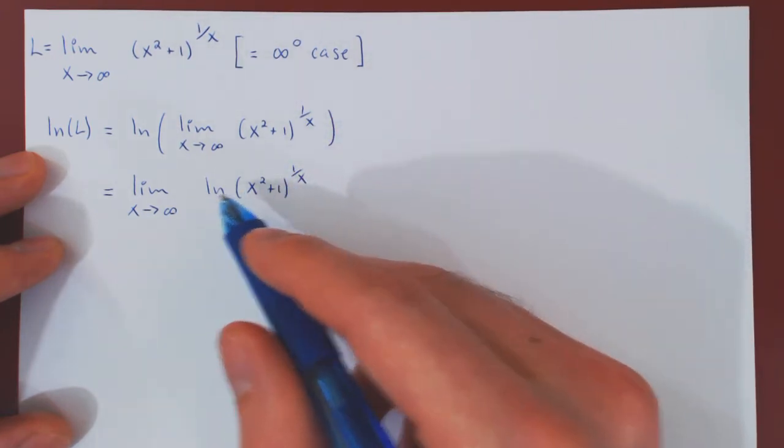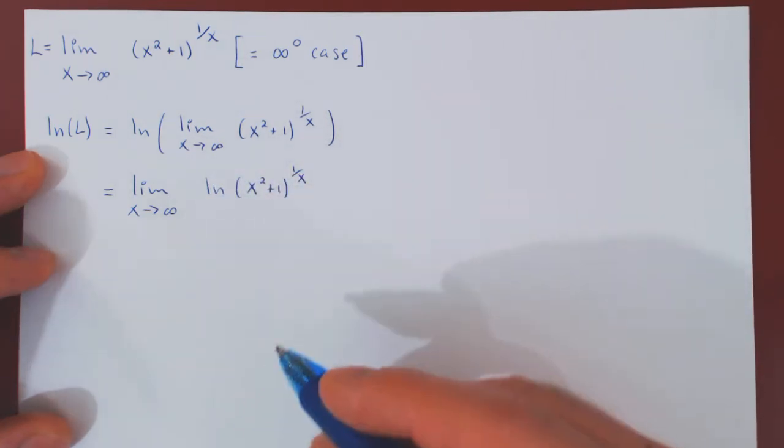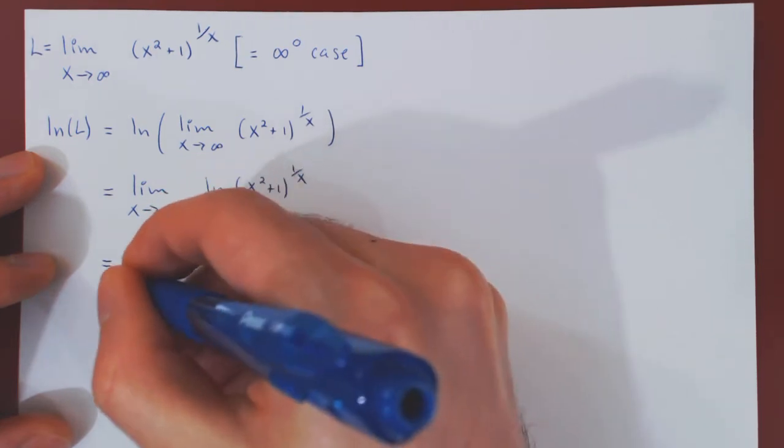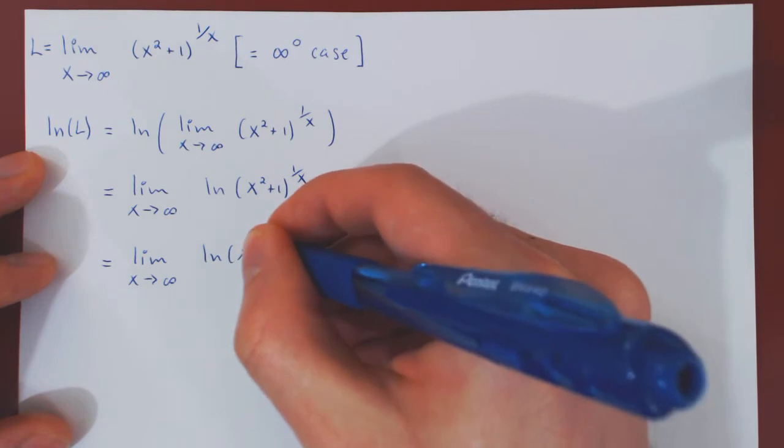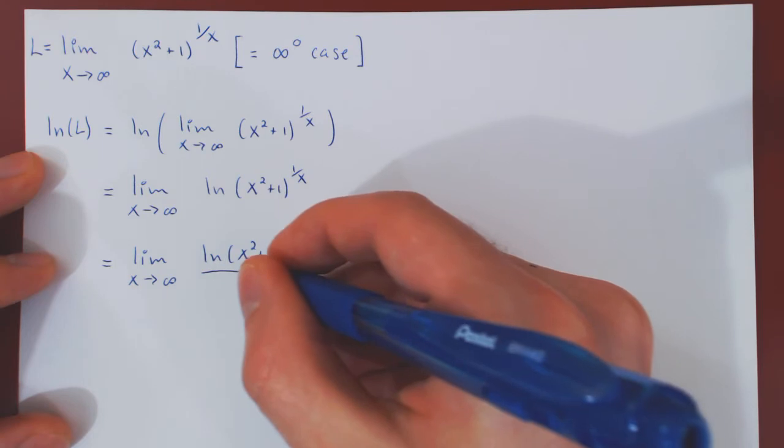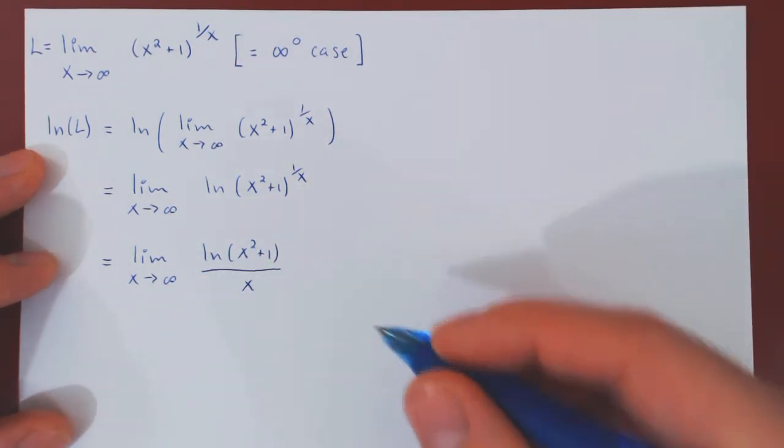Property of the logarithmic function, ln of a to the b is simply going to be b ln of a. But if we multiply by 1 over x, that's the same as dividing by x. And now we can look at what kind of case we're dealing with.